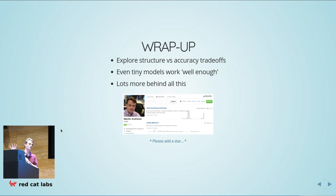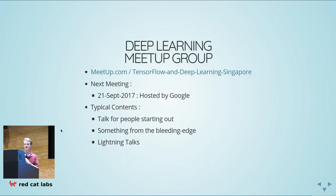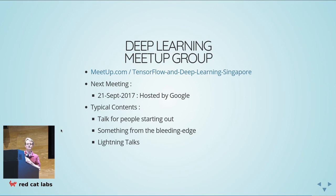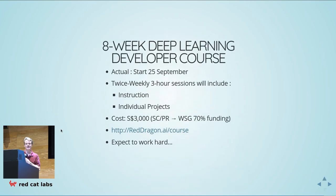You probably know about the Deep Learning meetup group here since you're here. Our next meetup is on the 21st of September, here again. We've got someone from the Google Brain team — actually a native Singaporean coming from Mountain View — who's going to talk about new and upcoming stuff. We'll have other cool content too. We always try to have a talk addressing people starting out, something from the bleeding edge, and we'd love more lightning talks — five minutes, any topic, there can be no disaster lightning talks.